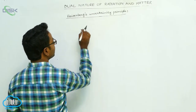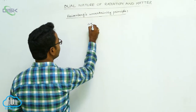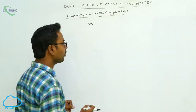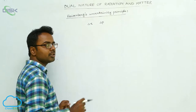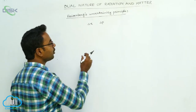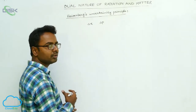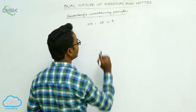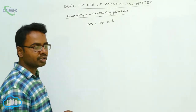In the specification of position of the electron, the uncertainty is delta x. Delta x is the uncertainty in the specification of position of the electron. Delta p is the uncertainty in the specification of momentum of the electron. The product of uncertainty in position and uncertainty in momentum is approximately of the order of h-cut: delta x into delta p is approximately equal to h-cut.